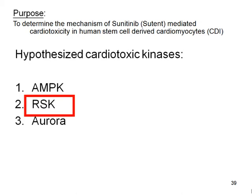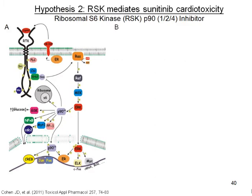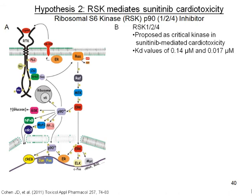The other kinase that Tom Forse hypothesized may mediate sunitinib cytotoxicity is RSK, ribosomal S6 kinase. It was proposed because it had KD values of 0.14 and 0.017 for RSK1 and RSK2, which was within the 0.1 micromolar effective plasma concentration of sunitinib. It also had an IC50 value of around 0.36 micromolar in a kinase assay, as worked on by Hassanoff's group.